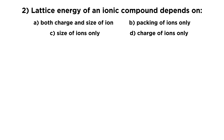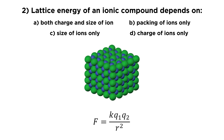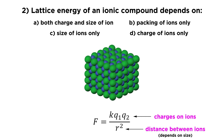The second one asks: the lattice energy of an ionic compound depends on? Let's look at an ionic lattice — we see some cations and some anions. This is going to be governed by Coulomb's law: F = kQ₁Q₂ / r². The relevant variables here are Q₁ and Q₂, which are the charges on the ions — we could have plus one and minus one, or plus two and minus two. And on the bottom we have r².